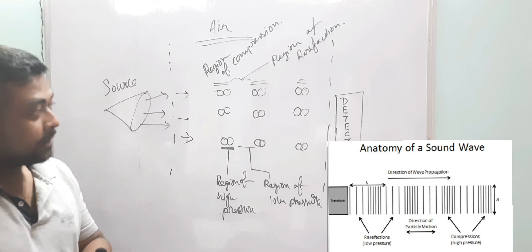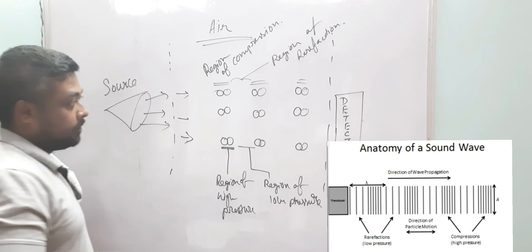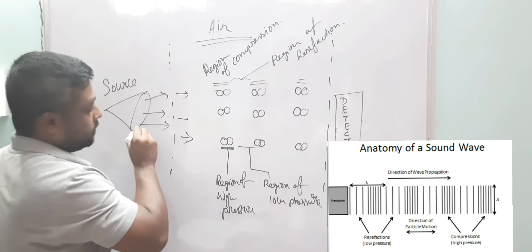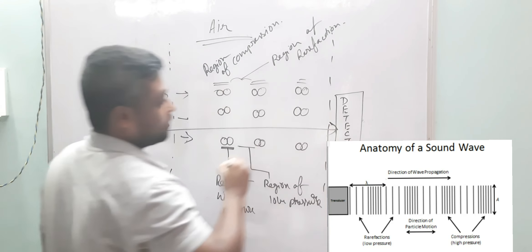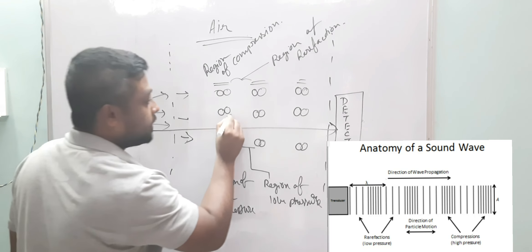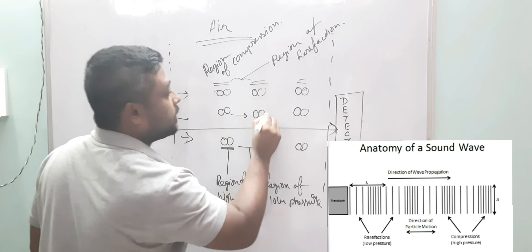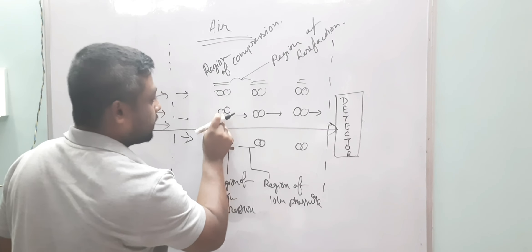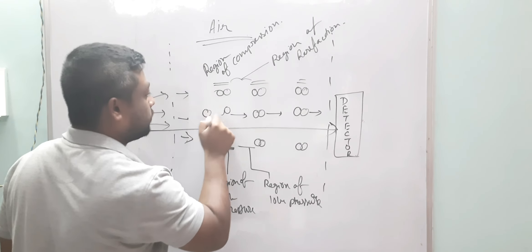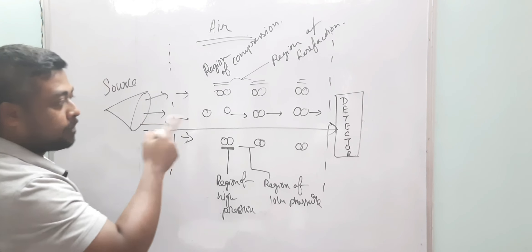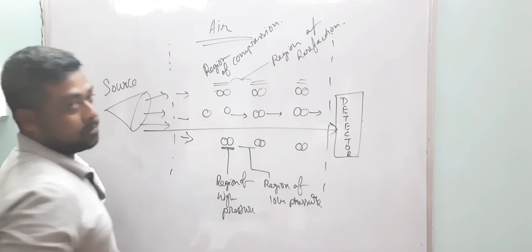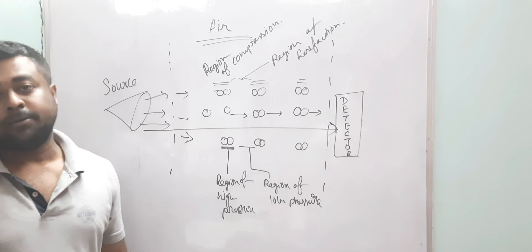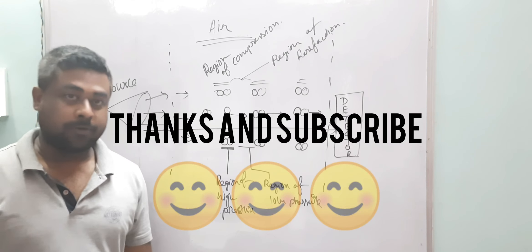This is why sound is called a longitudinal wave — because the sound is traveling from the source to the detector, and the particles are also vibrating in that same direction. After hitting the next particle, they come back to their original position, meaning the particles vibrate to and fro. This will be further explained by an experiment in upcoming videos. Thank you.